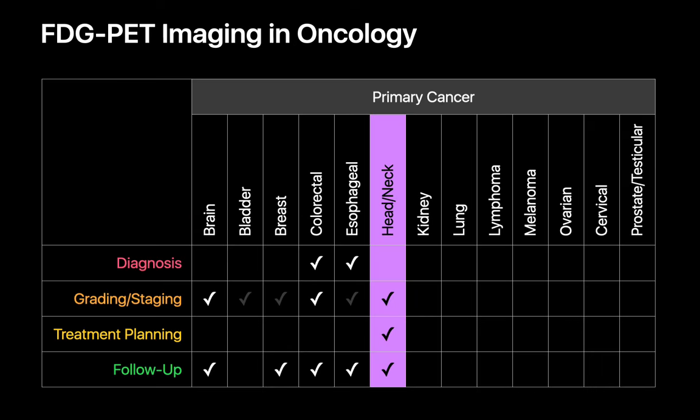The role of FDG PET-CT in squamous cell carcinomas of the head and neck includes staging, where it's a valuable means of identifying cervical nodal involvement, distant metastases, and synchronous primary tumors. The role also includes radiotherapy planning, where it can help delineate target volumes and plan radiation dose, in addition to assessing treatment response.